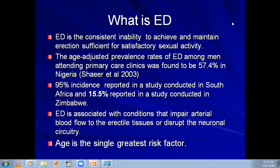When we look at erectile dysfunction, this is associated with a number of conditions that impair the arterial blood flow to the erectile tissues or disrupt the neuronal circuitry. These two aspects should prompt us to ask: what diseases are we talking about in terms of arterial insufficiency and disruption of the neuronal circuitry? The greatest risk factor that all men have is that as they age, the likelihood of having erectile dysfunction is quite high.